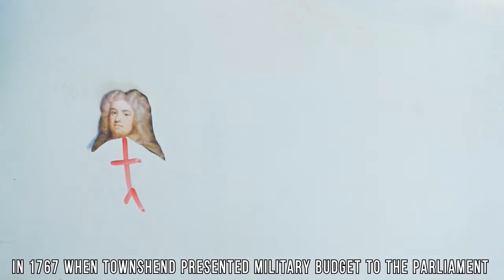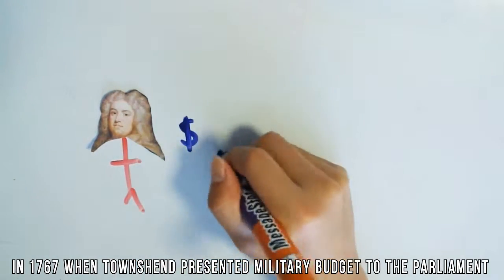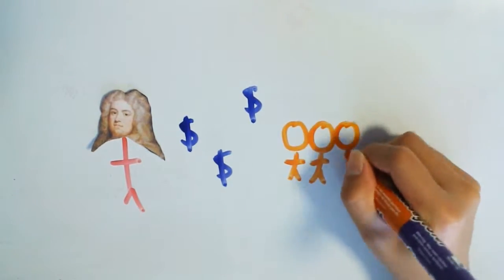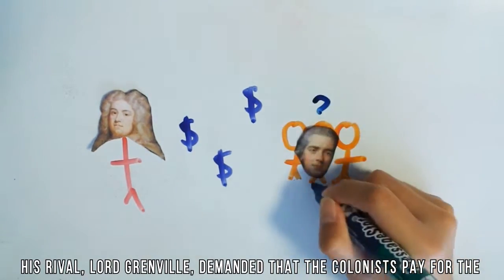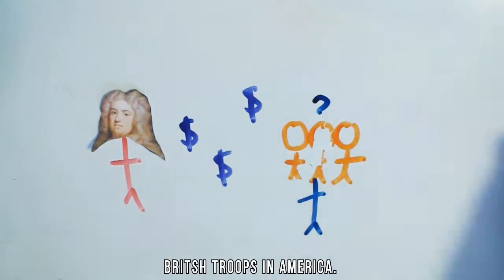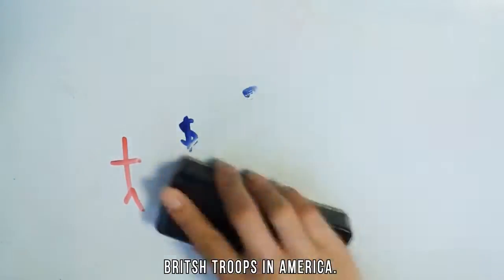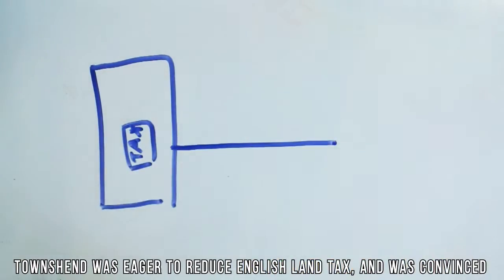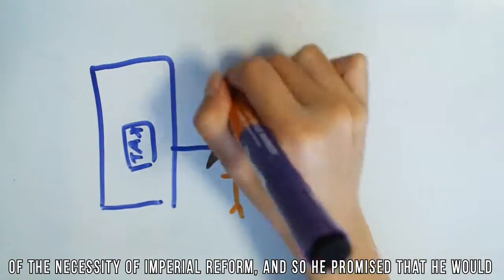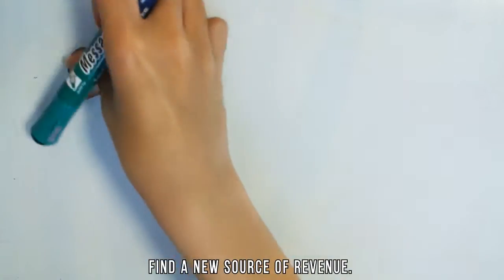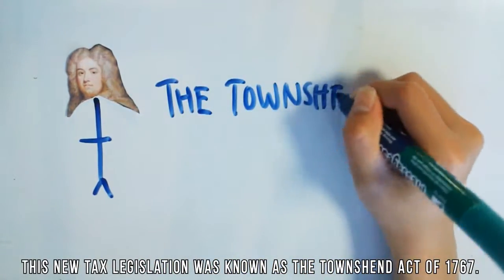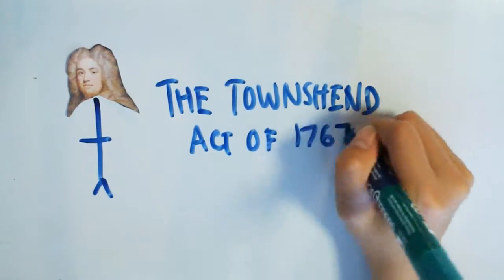In 1767, when Townsend presented the military budget to Parliament, his rival Lord Grenville demanded that the colonists pay for the British troops in America. Townsend was eager to reduce English land tax and was convinced of the necessity of imperial reform, and so he promised that he would find a new source of revenue. This new tax legislation was known as the Townsend Act of 1767.